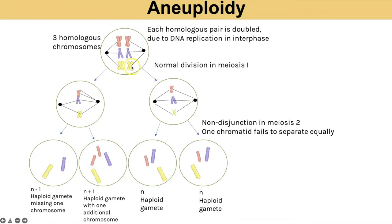Non-disjunction can also occur in meiosis 2. With normal meiosis 1 division but non-disjunction in meiosis 2 for the red chromosome, chromatids are not separated equally — they're all pulled to one gamete giving n+1, while the other is missing that chromosome giving n−1.